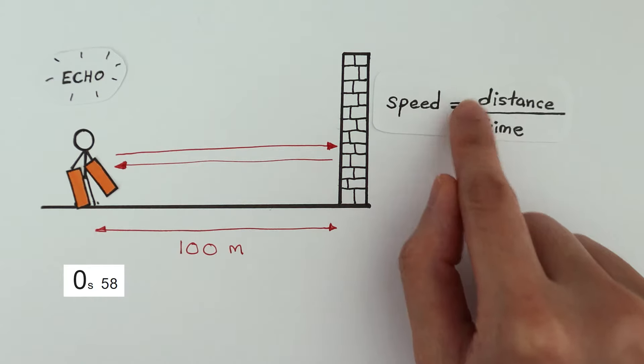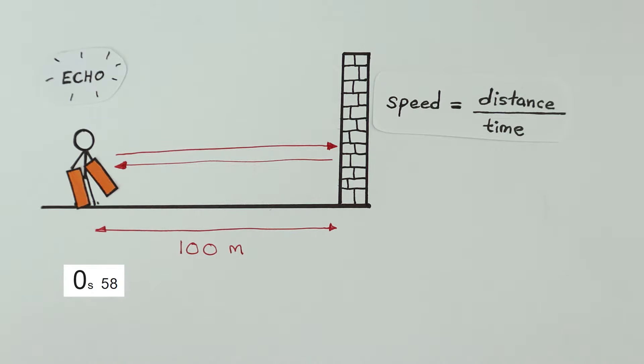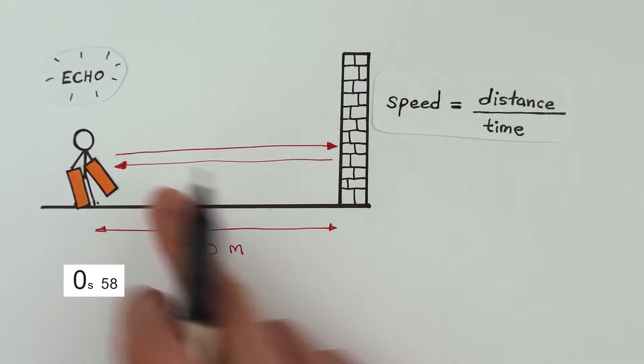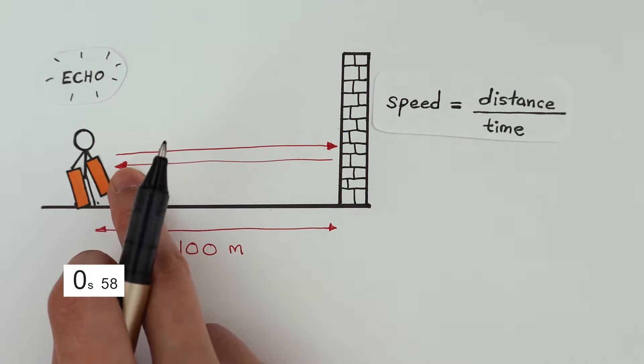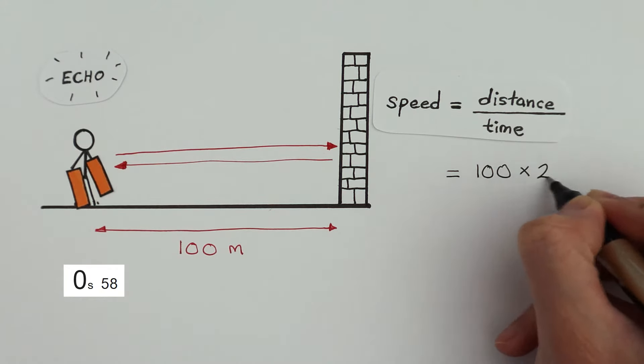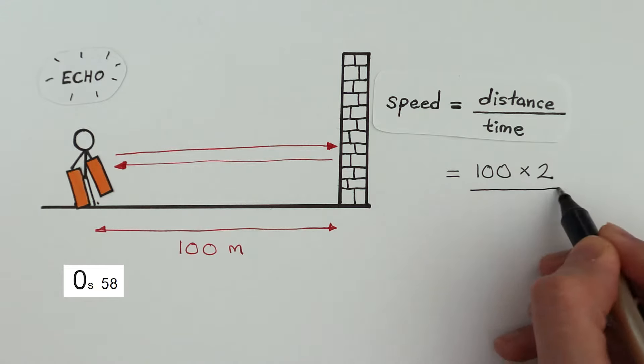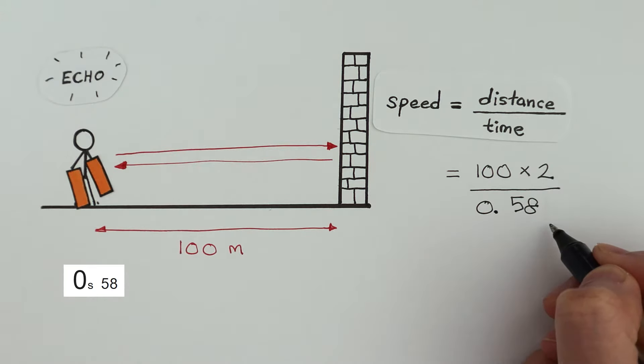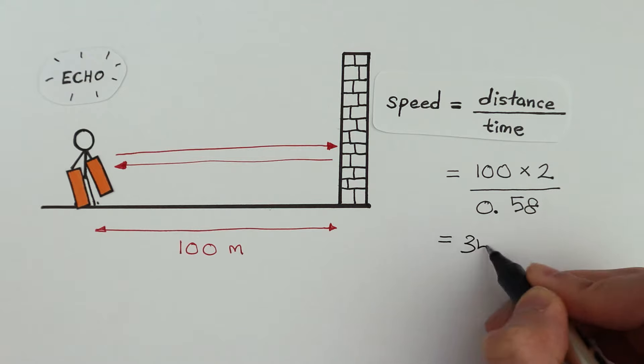We have the equation speed is distance divided by time. The distance that the sound wave has traveled there and back is 100 times 2. The time we got is 0.58 seconds. So plugging everything in, that gives us 340 meters per second for the speed of sound.